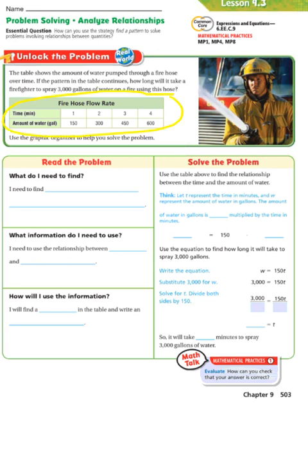The table has minutes at the top — 1, 2, 3, and 4 — and then the amount of water. For every 1 minute, it sprays 150 gallons of water.